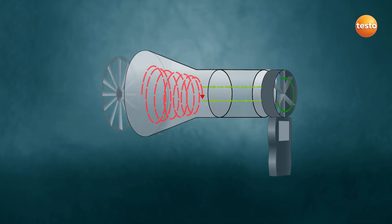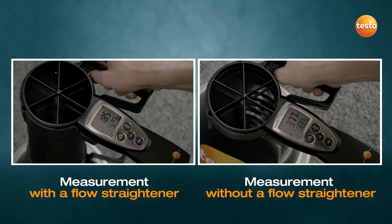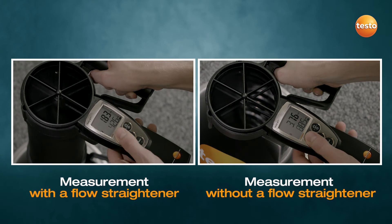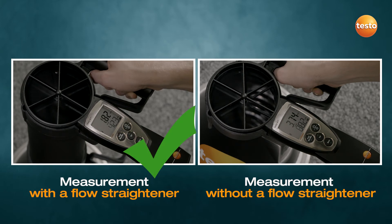With the patented TestoVent 417 flow straightener, any rotational movement of the air is first calmed and changed to a straight flow direction. This directed airflow is then reliably recorded with the vane. That way, the most accurate measurement results are achieved quickly and easily.